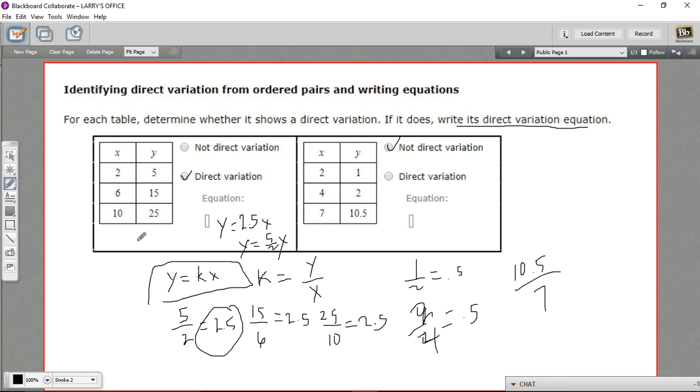So that is how to determine whether a set of x and y values shows direct variation, and then how to figure out that constant of variation, and how to write an equation for it.